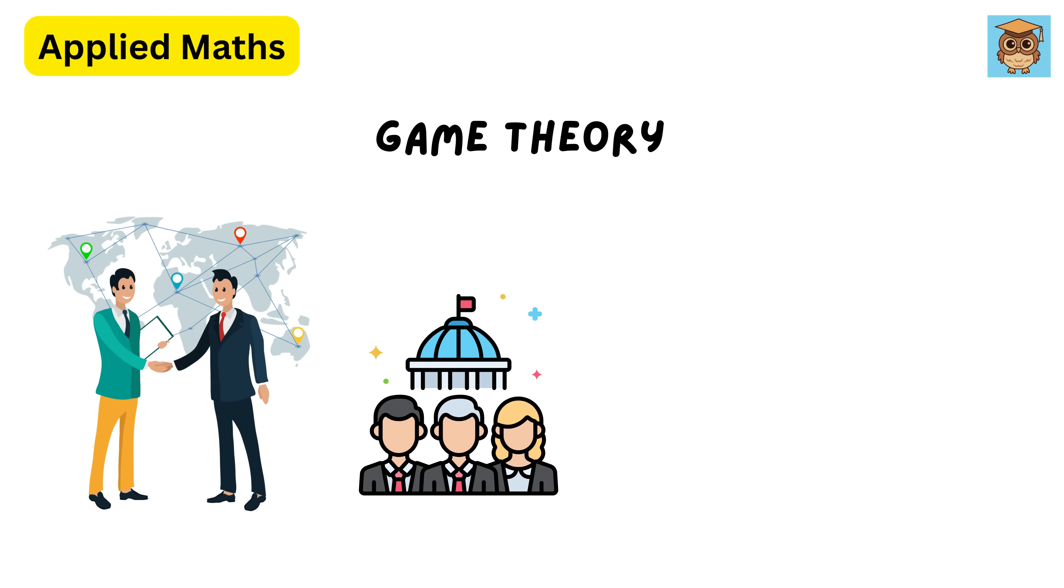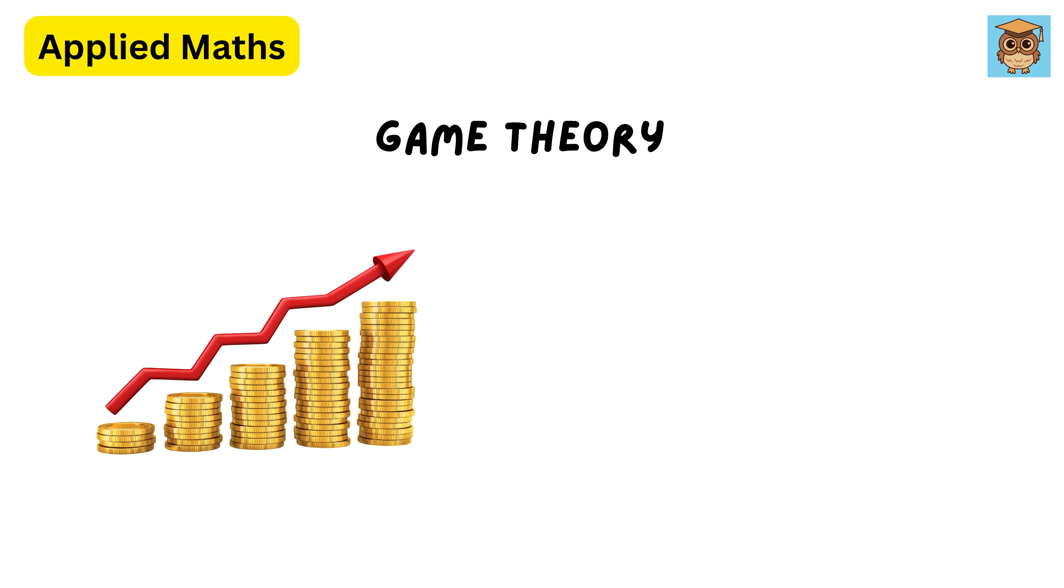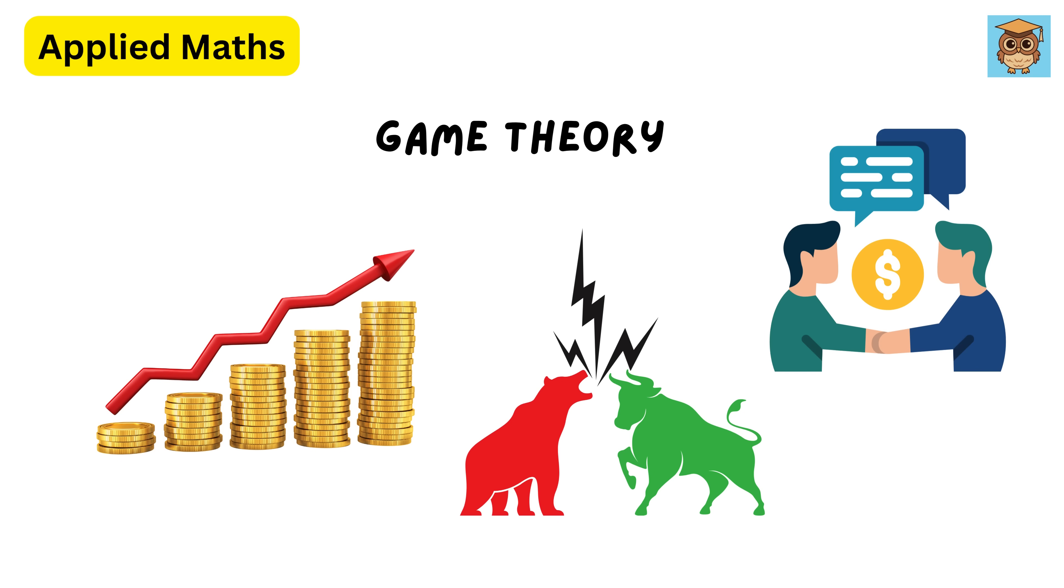Businesses, governments, and even nature use game theory to predict behavior and find the best strategies. It's how companies set prices, how animals compete for food, and even how negotiations work.